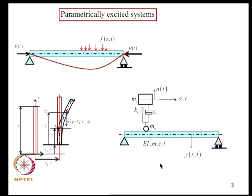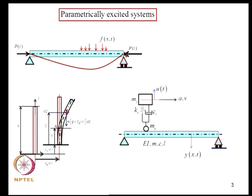The next question we considered was what happens if the axial loads are time dependent. We considered a few situations, for example when a beam is subjected to axial load P, or a stack subjected to biaxial earthquake ground motions with a vertical component. The presence of the vertical component appears as a parameter in the governing differential equation, and we call these systems parametrically excited systems, since P appears as a parameter multiplying a term involving the dependent variable.